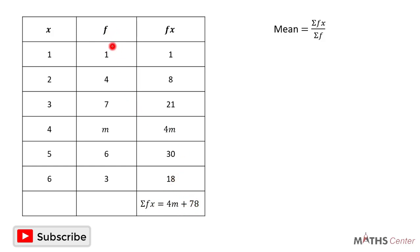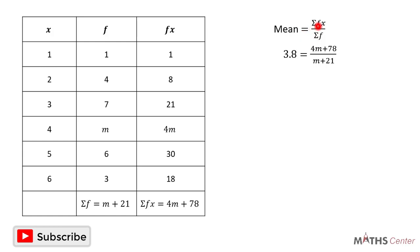We need sigma f, so we add all the f values: 1 plus 4 plus 7 plus m plus 6 plus 3, which gives m plus 21. So sigma f equals m plus 21. This means the mean equals sigma fx (4m plus 78) divided by sigma f (m plus 21). The question told us the mean is 3.8, so: 3.8 equals (4m plus 78) divided by (m plus 21).